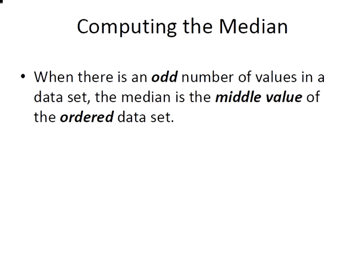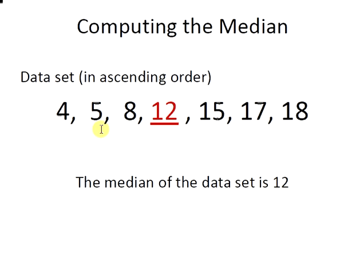So when there is an odd number of values in a data set the median is the middle value of the ordered data set. So here we have it again,